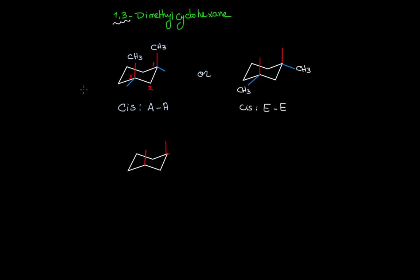For the trans isomer of 1,3-dimethylcyclohexane: if you place one CH₃ on axial on carbon one, the second CH₃ on carbon three has to be on equatorial, since axial and equatorial are facing opposite sides. So this is the trans conformation — axial and equatorial.